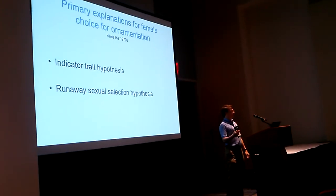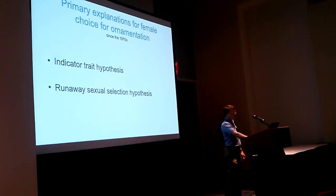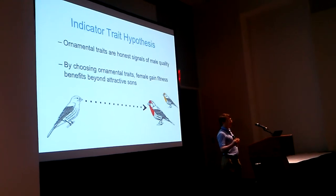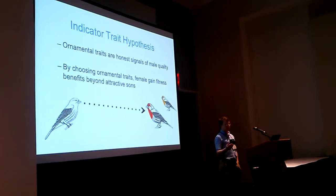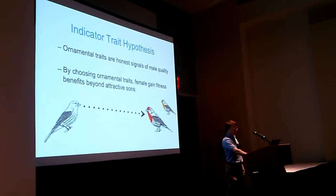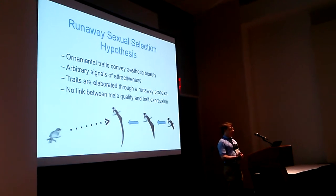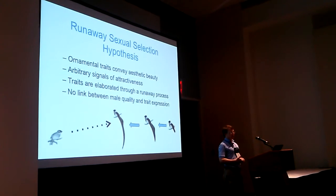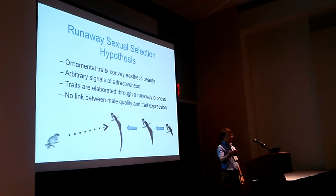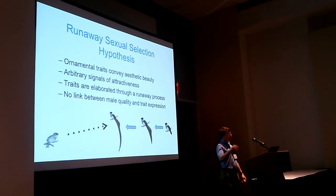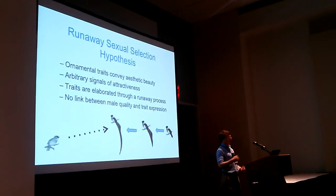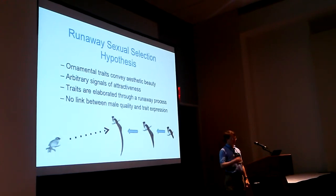Primarily we have the indicator trait hypothesis and the runaway sexual selection hypothesis. The indicator trait hypothesis proposes that ornamental traits evolve as honest signals of male quality - females prefer these traits because they gain a benefit, either good genes for offspring or direct resource benefits. The other prominent model is the runaway model, by which ornamental traits are signals of aesthetic beauty, not predicted to have any association with viability or functionality. Females choose these traits to get attractive sons, initiating a self-reinforcing runaway cycle producing very elaborate ornaments.